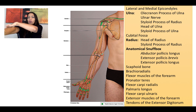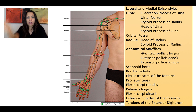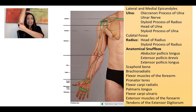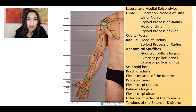These two epicondyles should be aligned on the same horizontal line as the olecranon posteriorly. If you trace a horizontal line, both epicondyles and the olecranon should all be aligned on the same horizontal line. If not, something is dislocated.